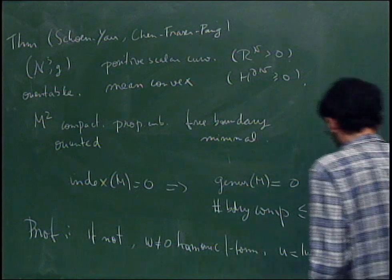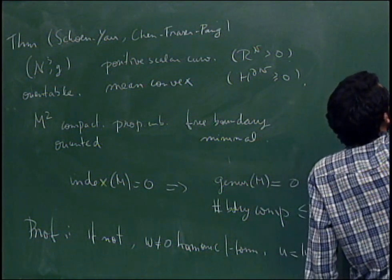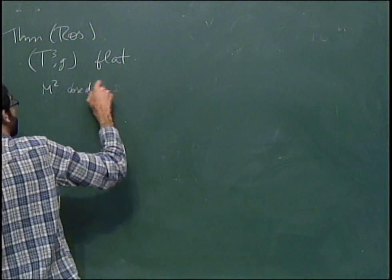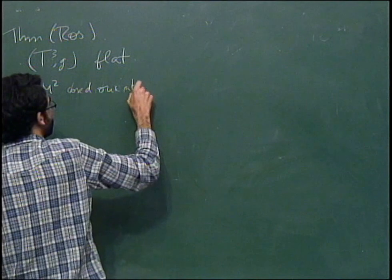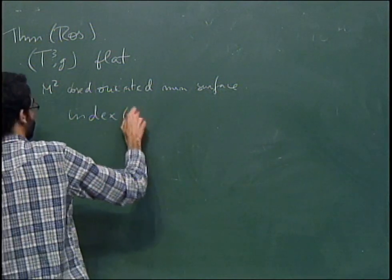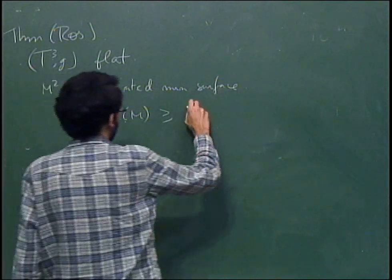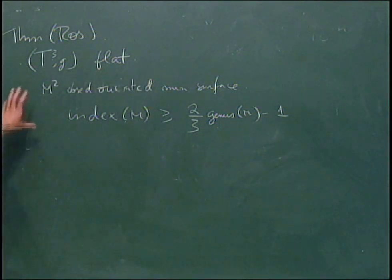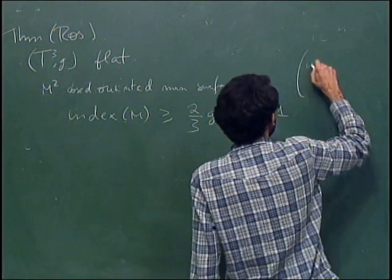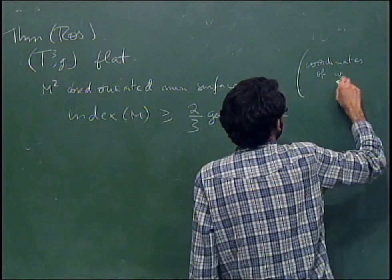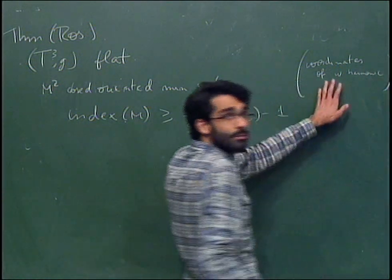The second result I want to state is the following theorem by Ross. Ross considered closed oriented minimal surfaces on flat tori and showed that the index of such a surface is bounded from below by two-thirds of the genus of M minus one. The idea of Ross was to use coordinates of harmonic forms as test functions.